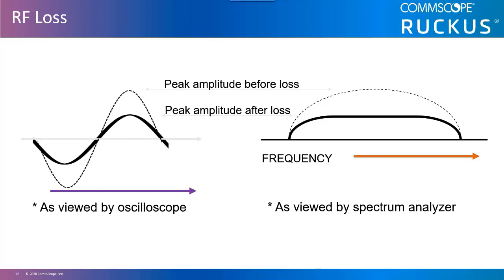Attenuators introduce loss in the cable connecting the radio with the antenna — the opposite of the work done by an amplifier. These are used to ensure compliance with regulatory domain limits and to restrict the coverage area.